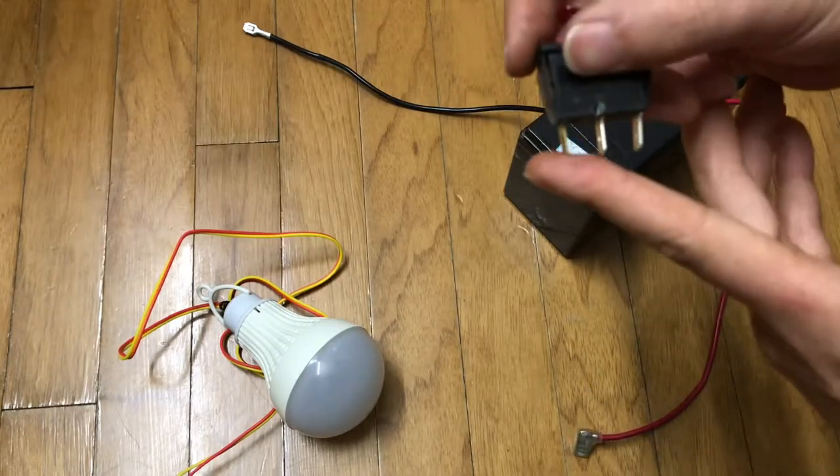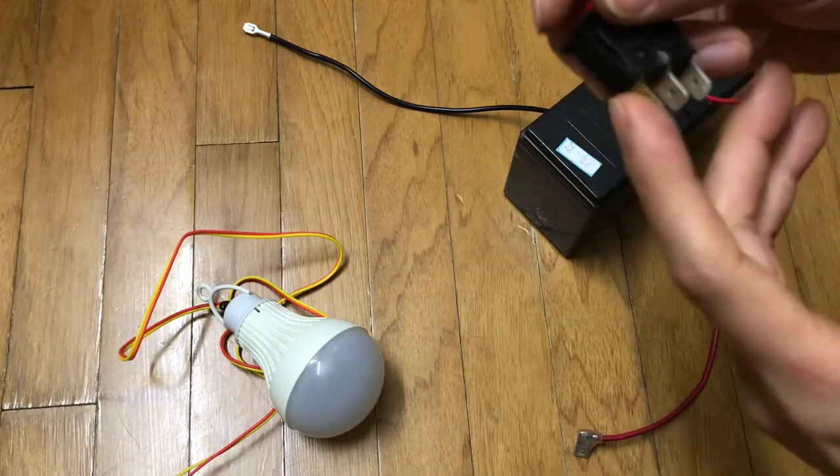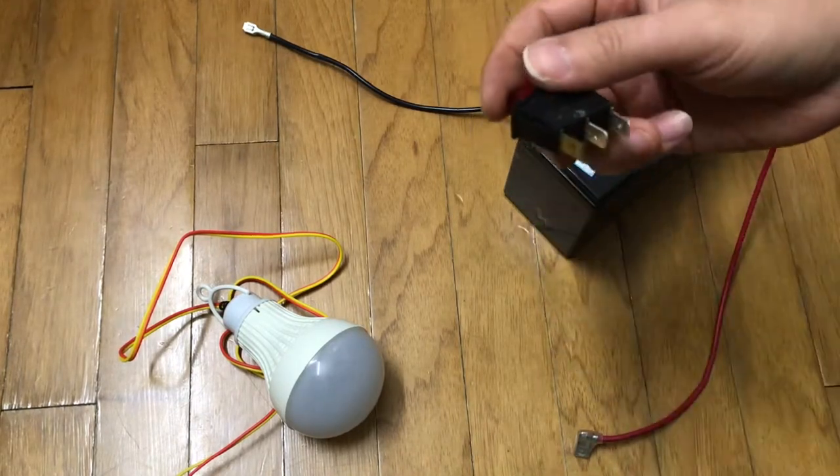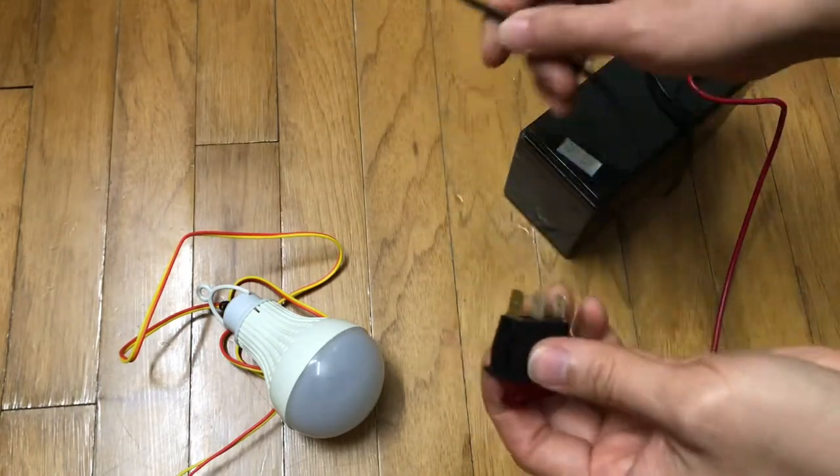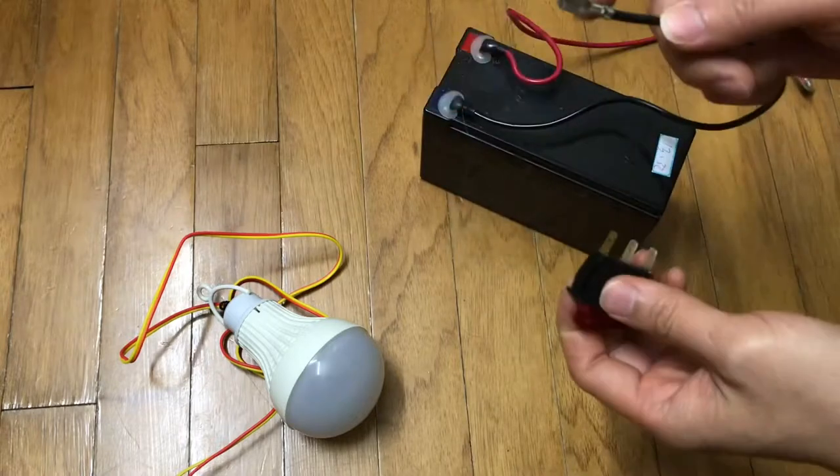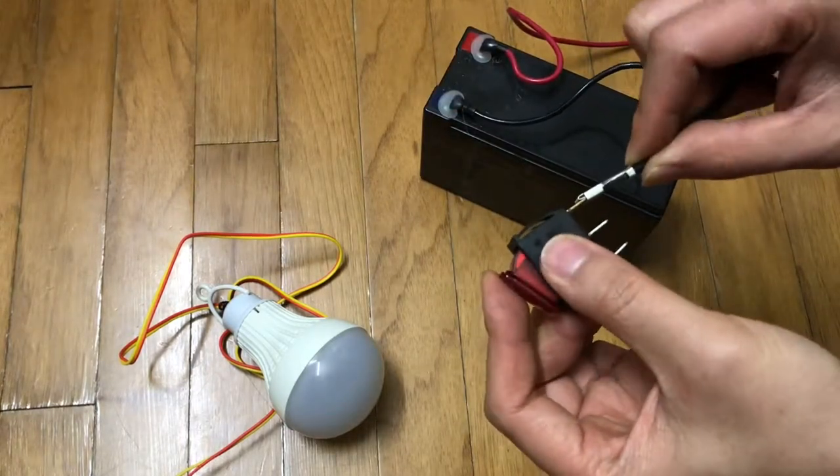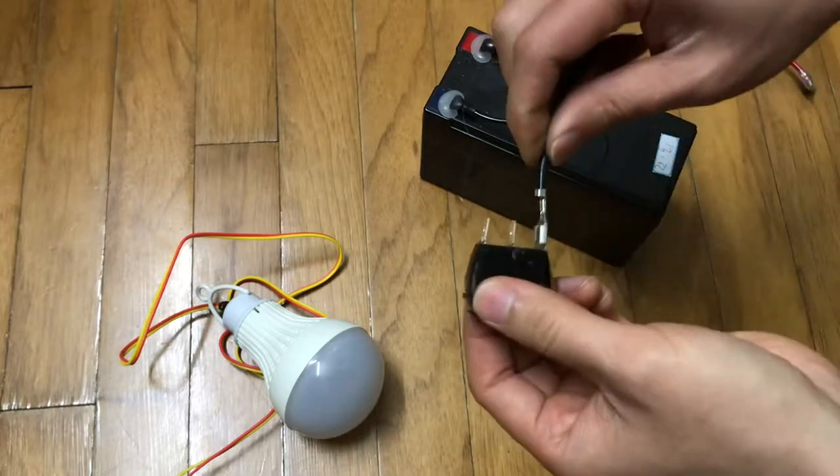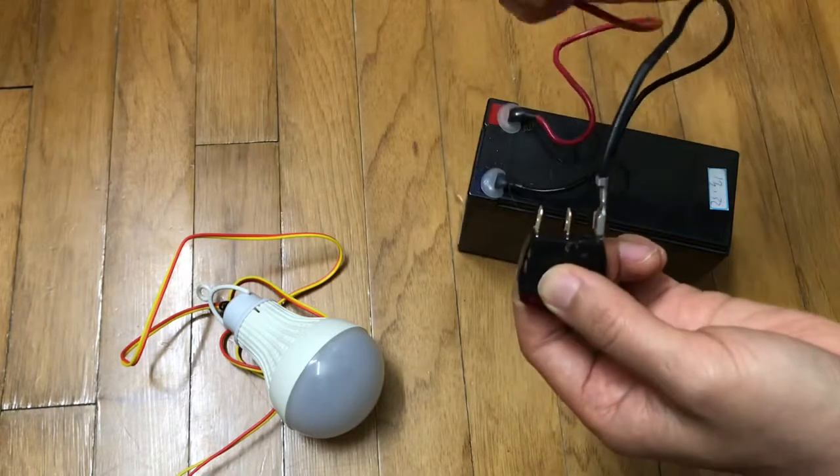The brass gold color prong is going to go to your negative of the battery. So I already hooked it up like this, so we're just going to go directly in here. And the middle one is going to go to your positive.